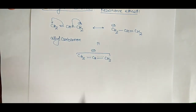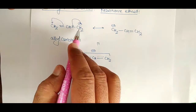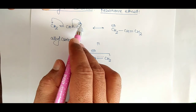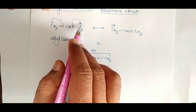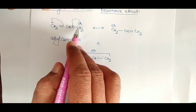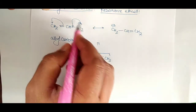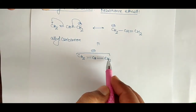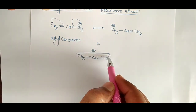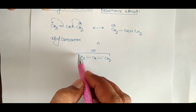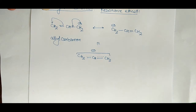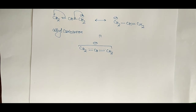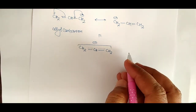If we talk about the overall resonating structure, the negative charge will disperse on all three carbon atoms. Before resonance, the negative charge was on only one carbon atom — it is always difficult to carry a negative charge on a single carbon. But through resonance, the negative charge distributes over three carbon atoms, so greater the dispersal of negative charge, greater the stability.